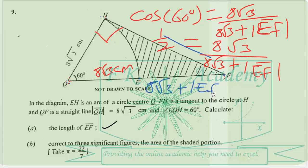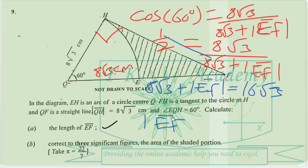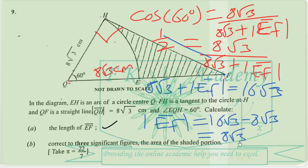The magnitude of line segment EF is equal to 2 times 8 root 3, which is 16 root 3. We subtract 8 root 3 from both sides, so the magnitude of line segment EF equals 16 root 3 minus 8 root 3, which gives us 8 root 3 centimeters.